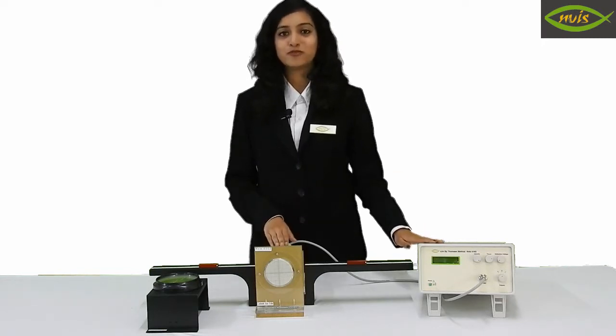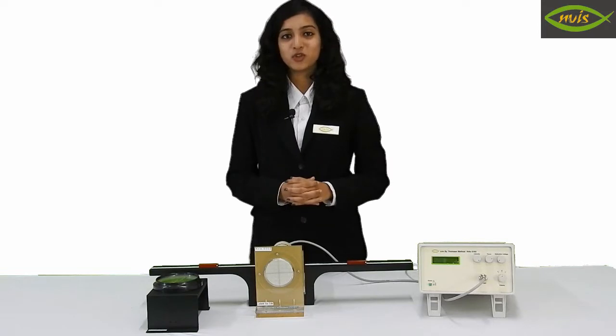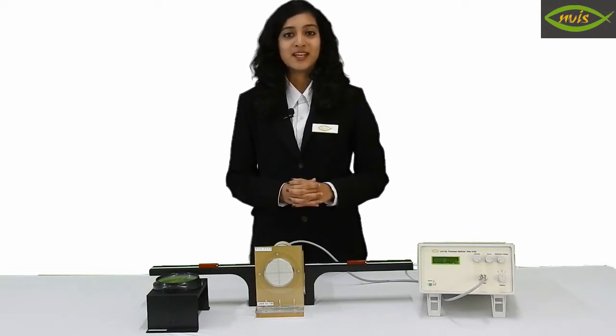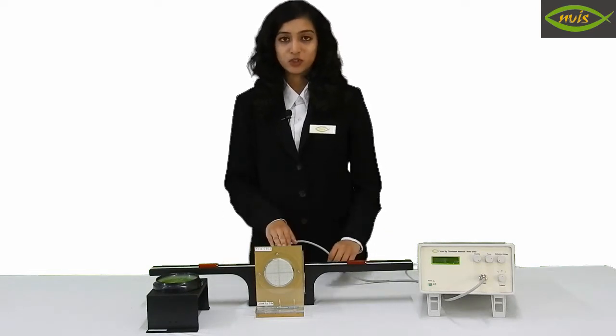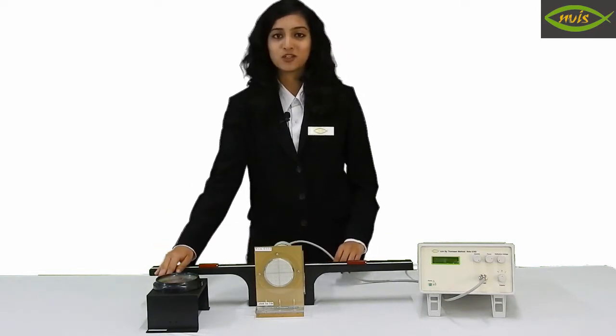This setup is used to find the specific charge ratio of electron. It is provided with a power supply, a mounting stand for cathode ray tube and a deflection magnetometer.